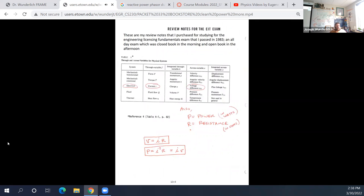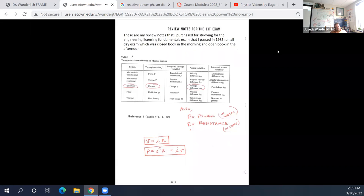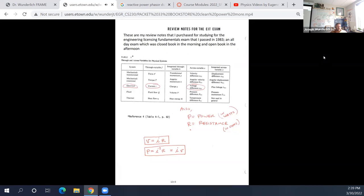What you see here are my review notes that I purchased when studying for the professional engineering fundamentals licensing exams that you take when you're a student. I took that and passed it in 1983. I just thought this would be a nice thing to compare the analogy between mechanical and electrical and fluid and thermal. So it helps you better understand electrical current is sort of like fluid flow. The analogies don't hold everywhere, and voltage is sort of like a fluid pressure.